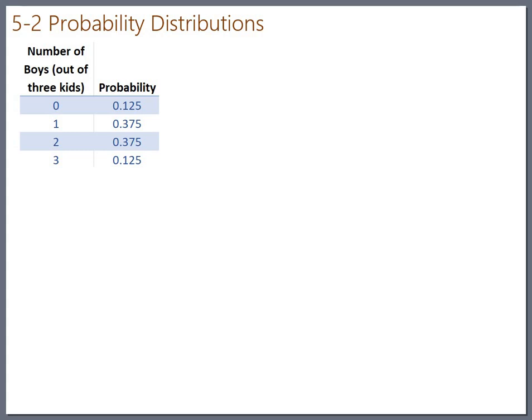And keep in mind we've seen this word distribution before when we talked about frequency distributions and that just meant a table that gave you the frequencies. Now we're just looking at a table that gives you the probabilities. So when you have three kids in a family and you have zero boys that'll happen about twelve and a half percent of the time. And when you have one boy and two girls like my family that'll happen about thirty-seven and a half percent of the time. So this is a probability distribution.